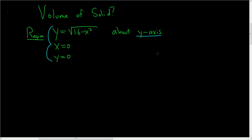So before we draw our official picture, let's think about this equation here. If we square both sides of this, we end up with y squared equals 16 minus x squared. And if we add x squared to both sides, we end up with x squared plus y squared equals 16.